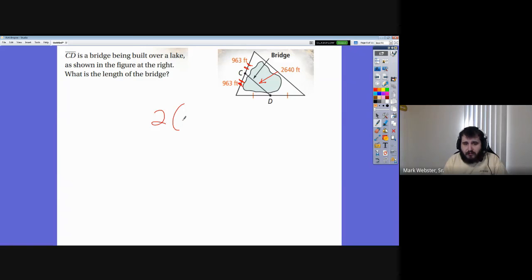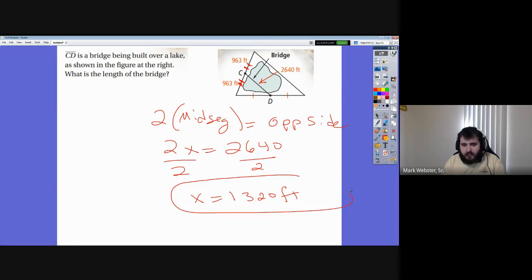So, two times the midsegment equals the opposite side. So, what am I going to do with that? Well, what's the midsegment? I don't know. Let's call it X. What's the opposite side? 2640. Ta-da! Let's solve. Divide both sides by two. Divide by two. 1, 3, 2, 0. 1,320 feet. What is the length of the bridge? That's what I'm looking for, CD, in feet.